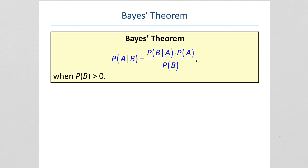Bayes' theorem states that P(A|B) equals P(B|A) times P(A) over P(B). So if you can't figure out what P(A|B) is, but you know what P(B|A) is, then you can find P(A|B), or vice versa.